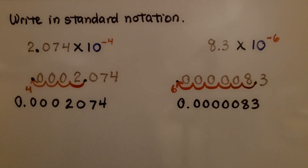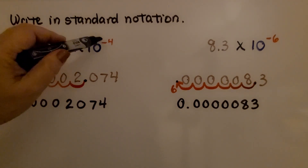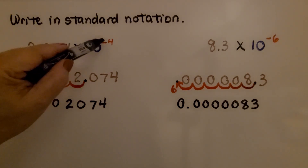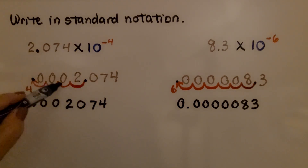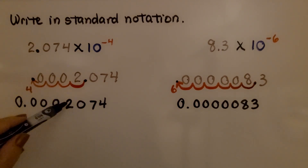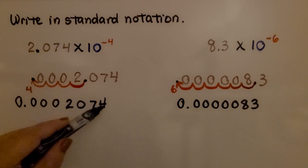Here it's telling us to write it in standard notation. We have 2.074 times 10 raised to the negative 4th power. We see this negative exponent and know we're going to jump 4 spaces to the left. That gives us 0.0002074.